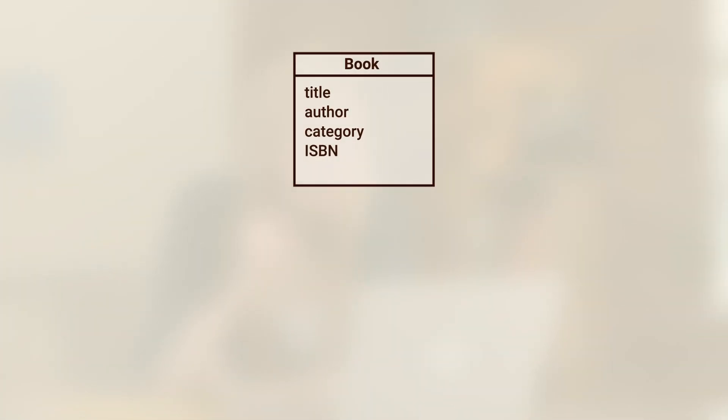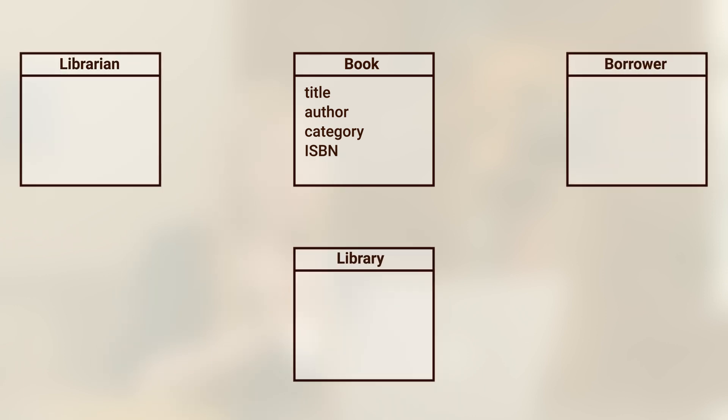Even if I'm not adding these attributes now, I can always add them in a future iteration if, when seeking feedback from collaborators or users, people tell me it's actually important to have the cover illustration in my database. You'll notice I'm writing all the attributes of the book in lowercase — this is a UML standard — and if there were compound words, we would write them in camelCase, which you'll see shortly. We'll go ahead and add other objects to our diagram, including the librarian, the borrower, and the library itself.